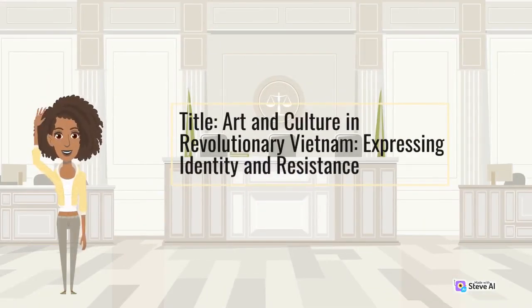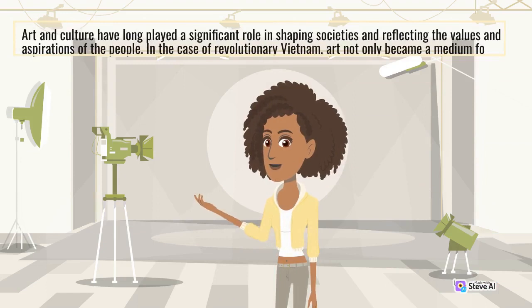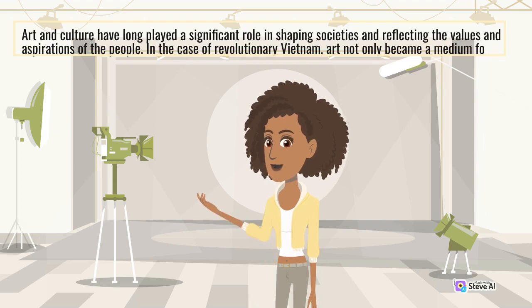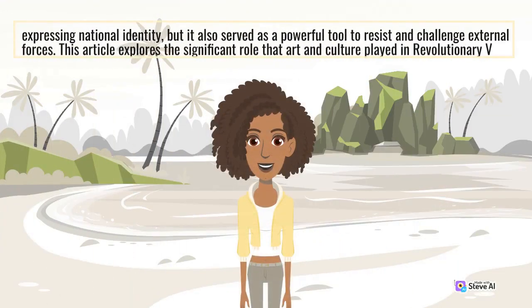Art and Culture in Revolutionary Vietnam: Expressing Identity and Resistance. Art and culture have long played a significant role in shaping societies and reflecting the values and aspirations of the people. In the case of revolutionary Vietnam, art not only became a medium for expressing national identity, but it also served as a powerful tool to resist and challenge external forces.